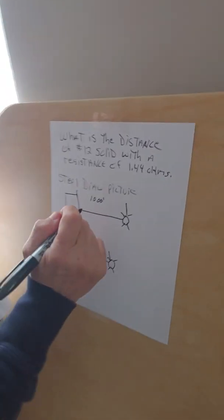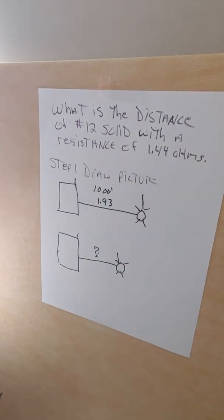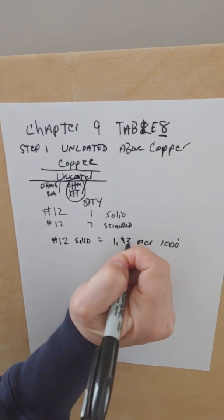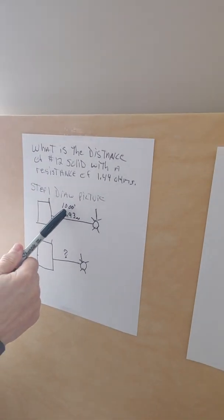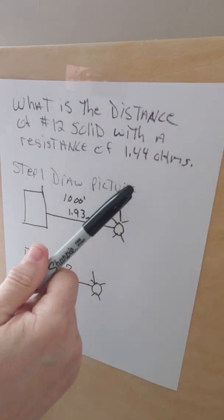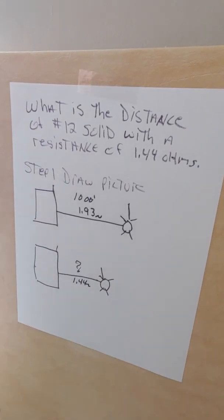Over here we're going to write 1.93 ohms. So what we want to find out is, if it's a thousand feet at 1.93, how much is it at 1.44 ohms?